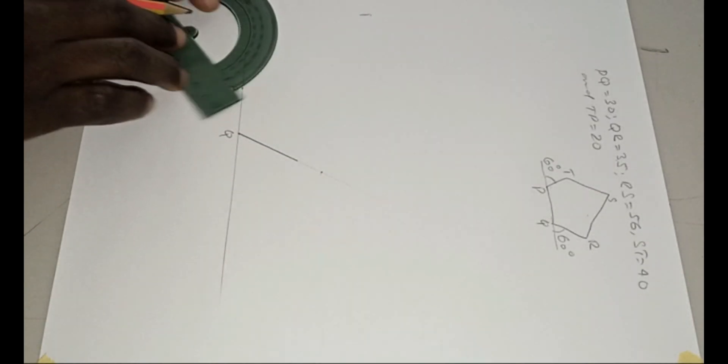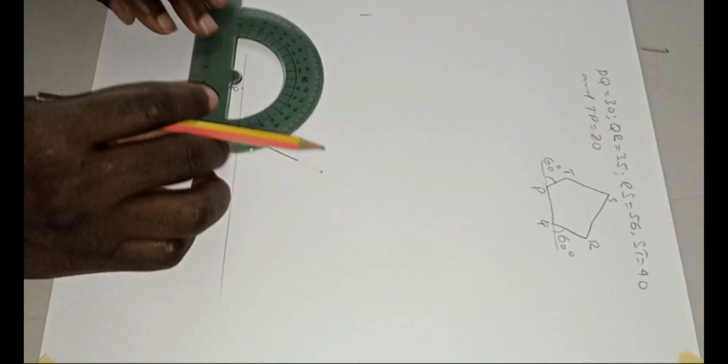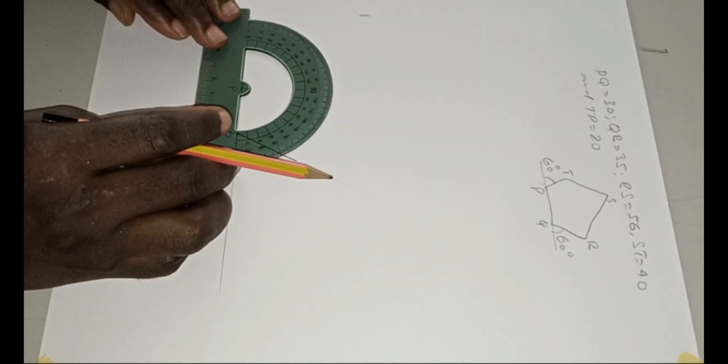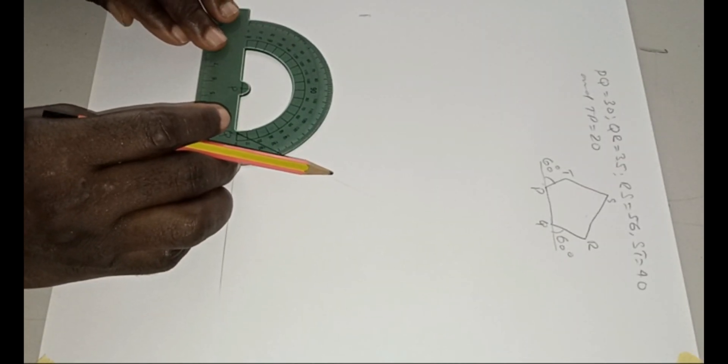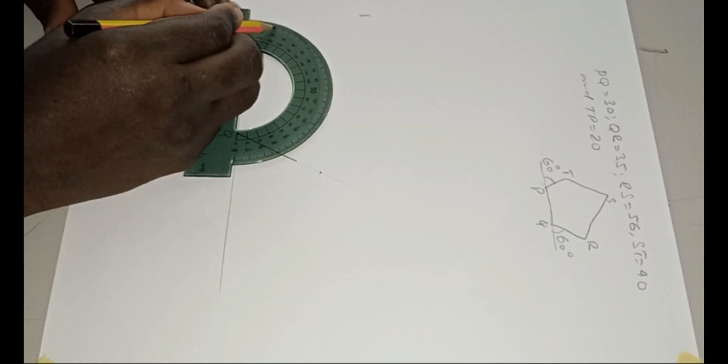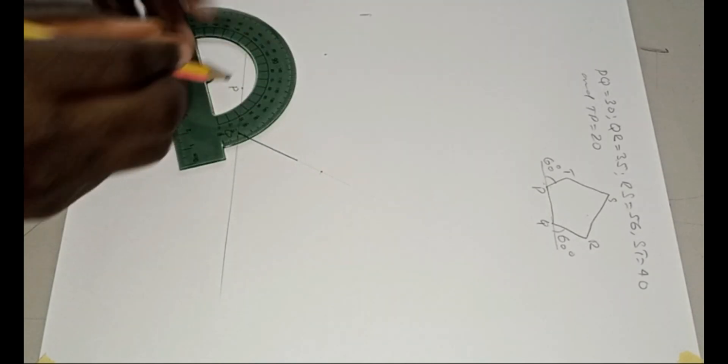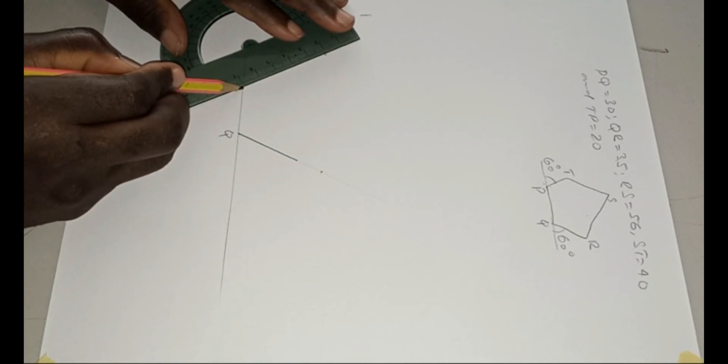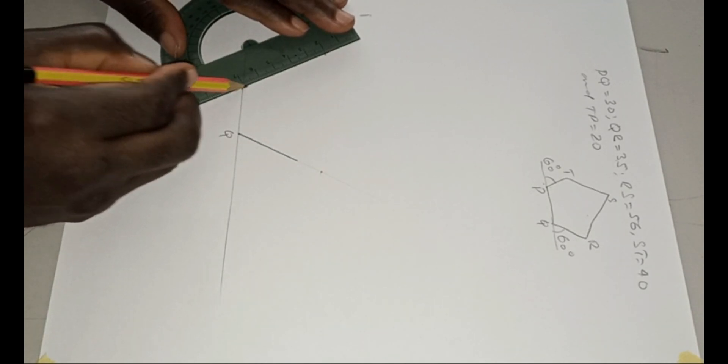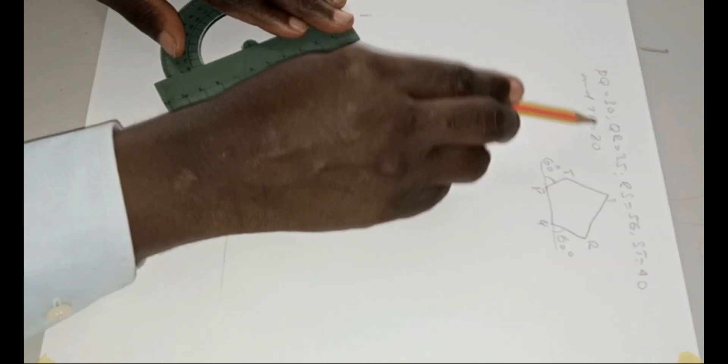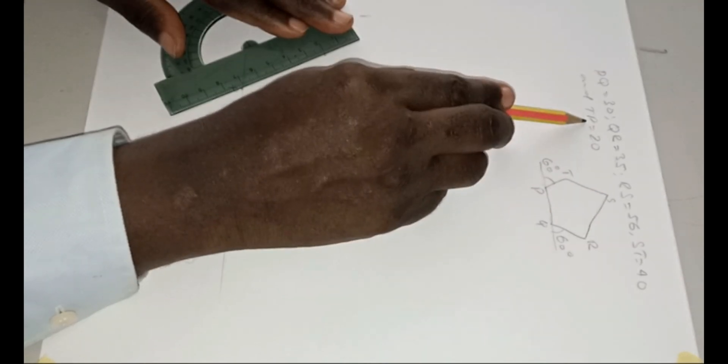Now we also measure 60 degrees. This is 60 degrees at P, that's the external angle: 10, 20, 30, 40, 50, 60 is here. And what is our PT? TP is 20.